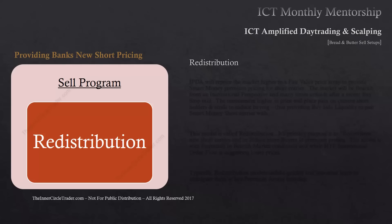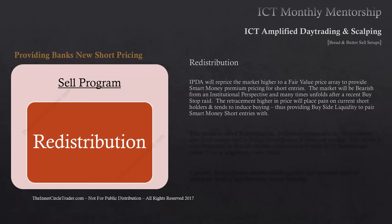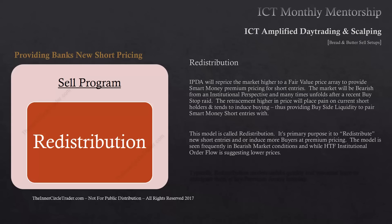Providing banks new shorting opportunities — redistribution. IPTA will reprice the market higher to a fair value price array to provide smart money premium pricing for short entries. The market will be bearish from an institutional perspective and many times unfolds after a recent buy stop raid. The retracement higher in price will place pain on current short holders and tends to induce buying, thus providing buy side liquidity to pair smart money short entries with. This model is called redistribution. Its primary purpose is to redistribute new short entries and/or induce more buyers at premium pricing. The model is seen frequently in bearish market conditions while higher time frame institutional order flow is suggesting lower prices. Typically, redistribution models unfold quickly and you must learn to anticipate them at key premium rates intraday.